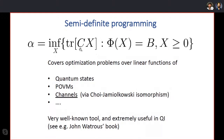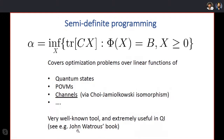Semi-definite programming is a mathematical tool for optimization problems of this general form: you optimize a linear function Tr[CX] over a variable X subject to linear constraints and the constraint that X is positive semi-definite. This is very useful in quantum information because it covers optimizations over quantum states, POVMs, and quantum channels via the Choi-Jamiołkowski isomorphism, which maps problems about quantum channels to problems about bipartite quantum states. A good reference is the book by John Watrous.